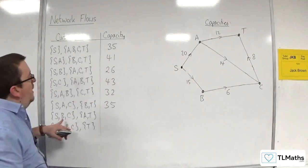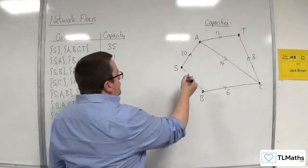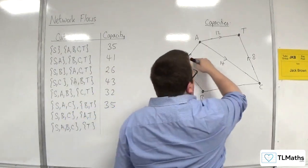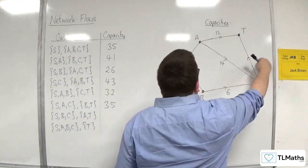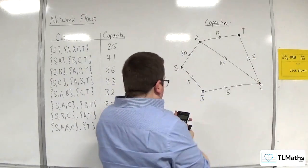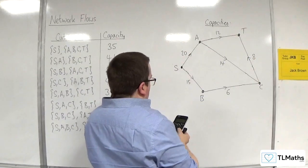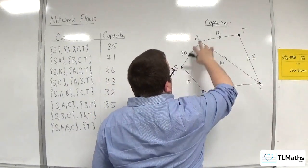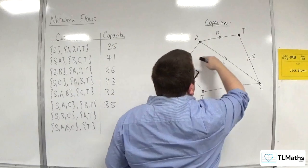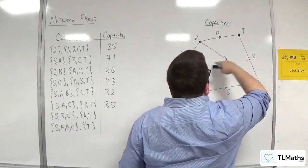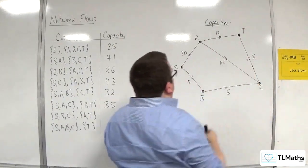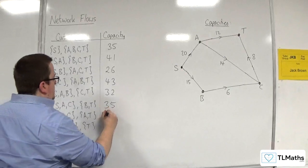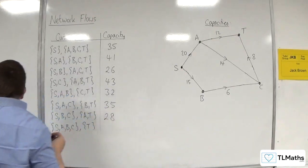Then we've got S, B, C — cutting along here. That would include the 20, going from S to A. Not the 14, but it will include the 8. So 20 plus 8 is just 28 on that one.